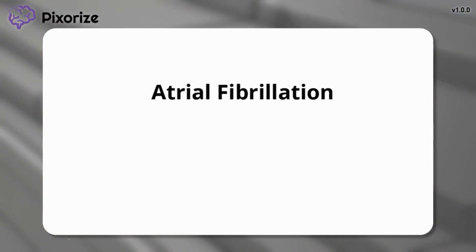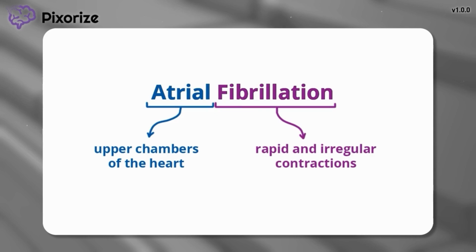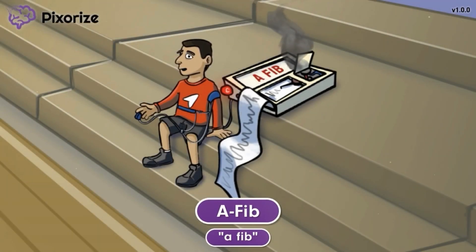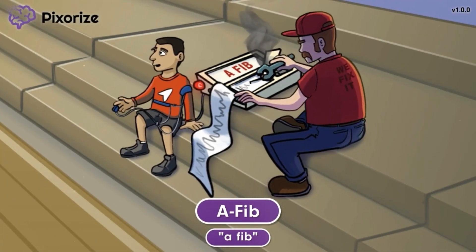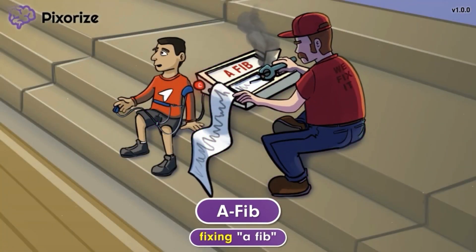Breaking down the term: atrial refers to the atria or upper chambers of the heart, while fibrillation refers to a pattern of rapid and irregular contractions that makes it appear as if a muscle is twitching or vibrating. Putting this together, atrial fibrillation is an abnormal heart rhythm in which the atria beat rapidly and irregularly, resembling the line produced by this lie detector. Since the lie detector machine is broken, another repairman is fixing it — symbolizing how Dofetilide and Ibutilide treat AFib.